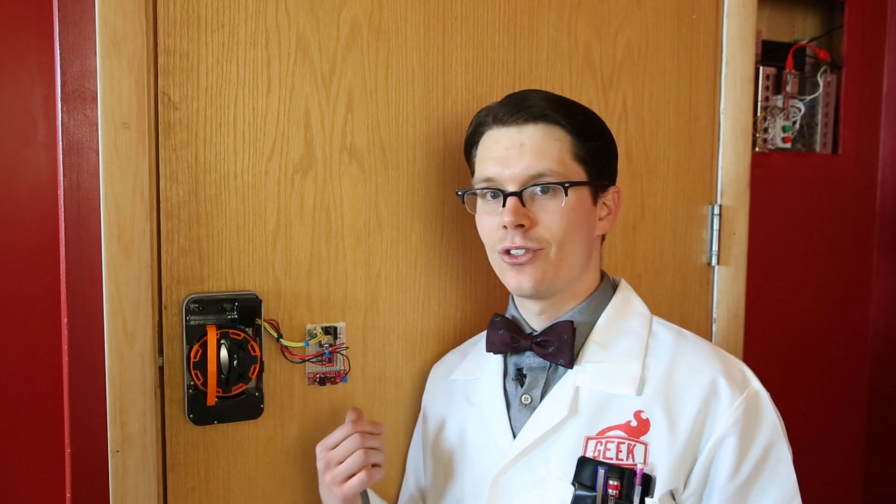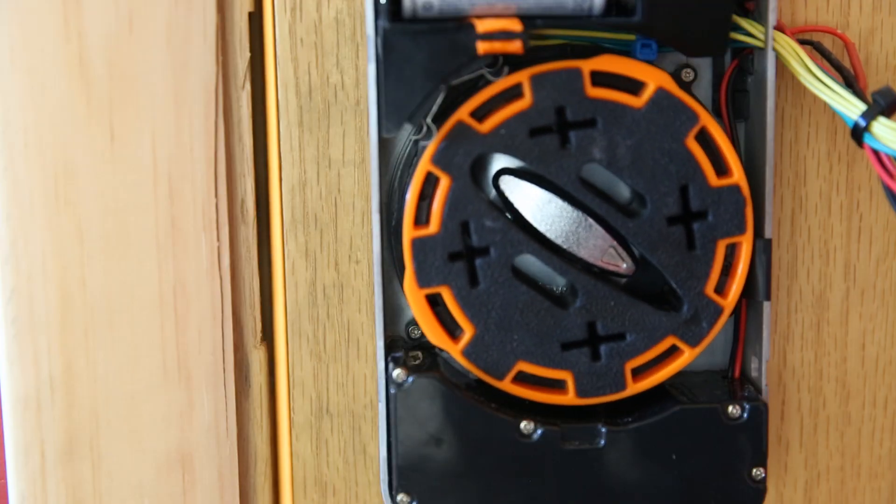The RF-DUINO allows me to use Bluetooth Low Energy to send commands to the device and unlock and lock my door as I see fit.